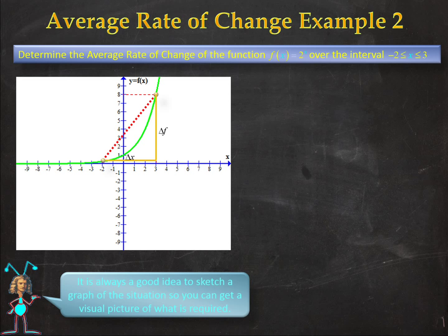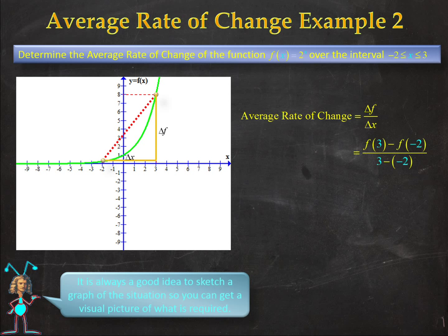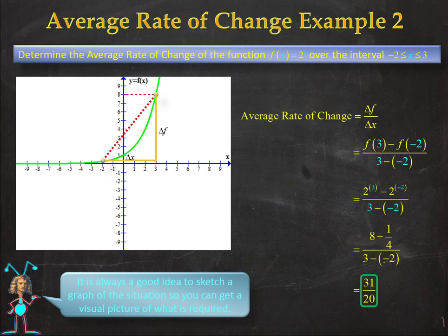So let's jump into the algebra. The average rate of change is equal to delta f over delta x, which is just f of 3 minus f of minus 2, over 3 minus minus 2. Make sure that you keep the right order. Inserting these values into the function and simplifying, I get the value 31 over 20, or 1.55.